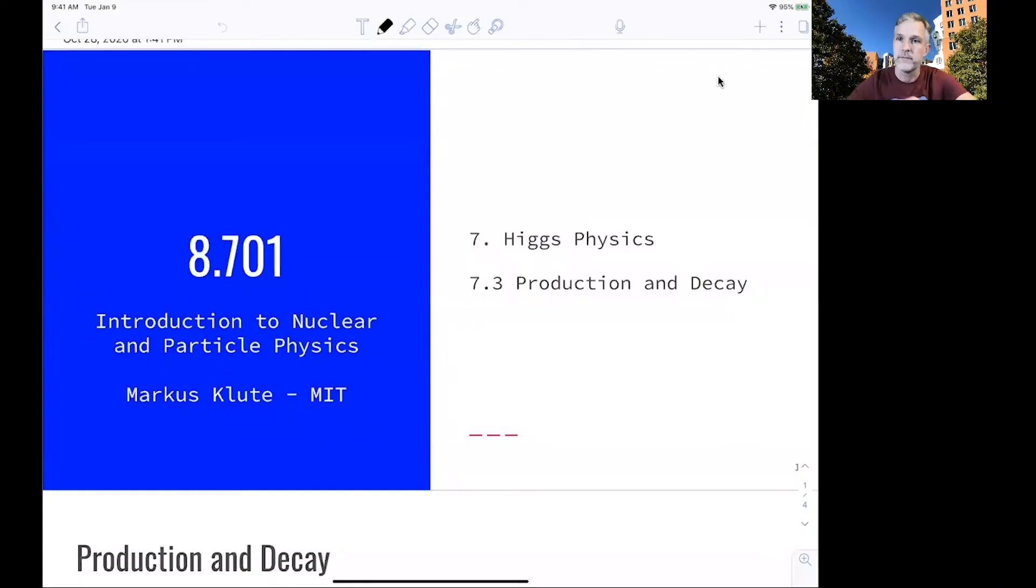Welcome back to 8.701. The theory about the Higgs boson is quite interesting, and we have seen that it's able to produce masses of bosons and fermions. But as Feynman said, a theory is only as good as the experiment.